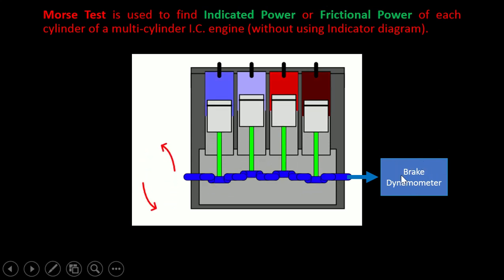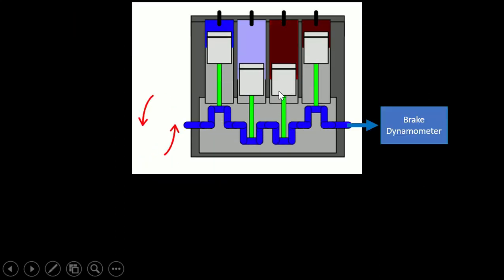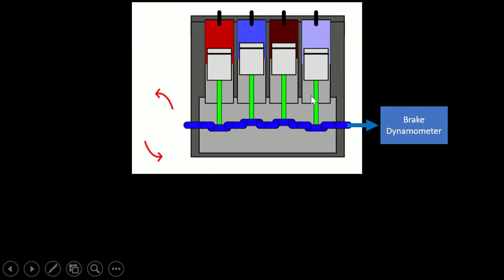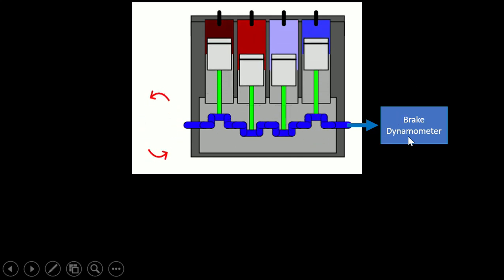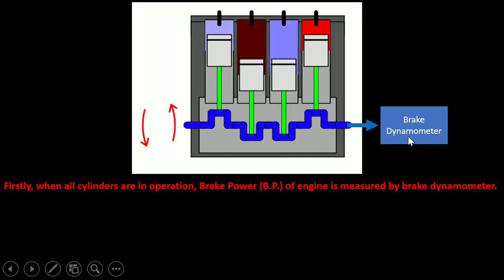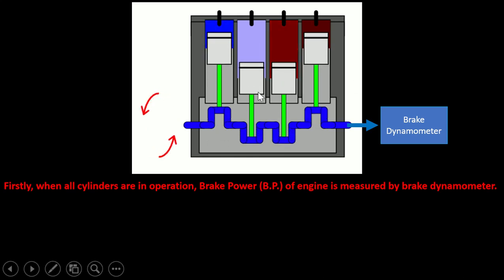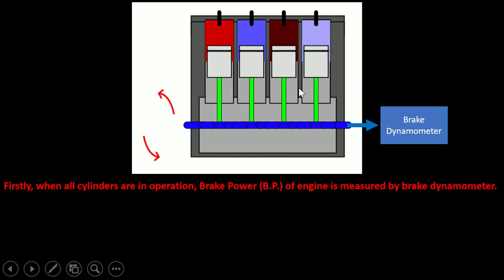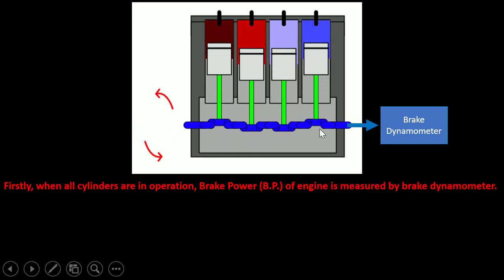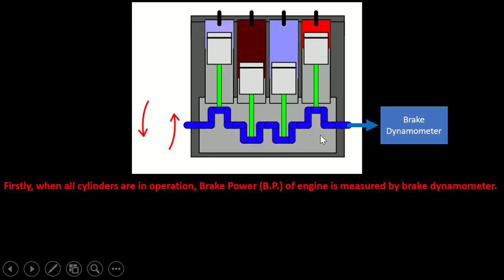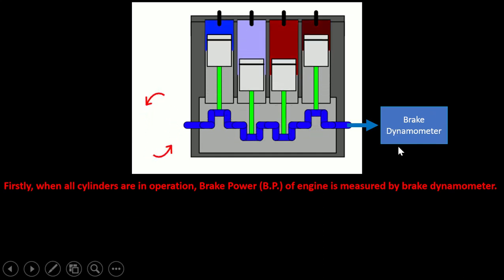Here you can see a brake dynamometer. These are the four cylinders and this is the brake dynamometer. When all cylinders are in operation, as you can see here, all the cylinders are in operation and the brake power of the engine is measured by the brake dynamometer.